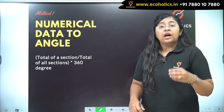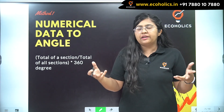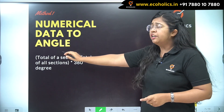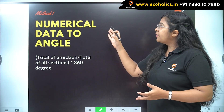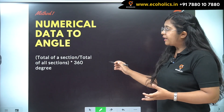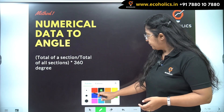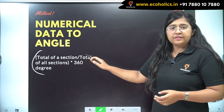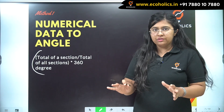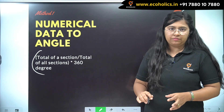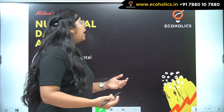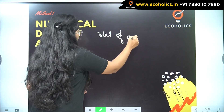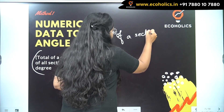When you have numerical data — some amount of units — and you have to convert it into an angle, you will use this formula: the total of a section divided by the total of all sections, multiplied by 360 degrees. This gives you the angular representation of that section in the pie chart.